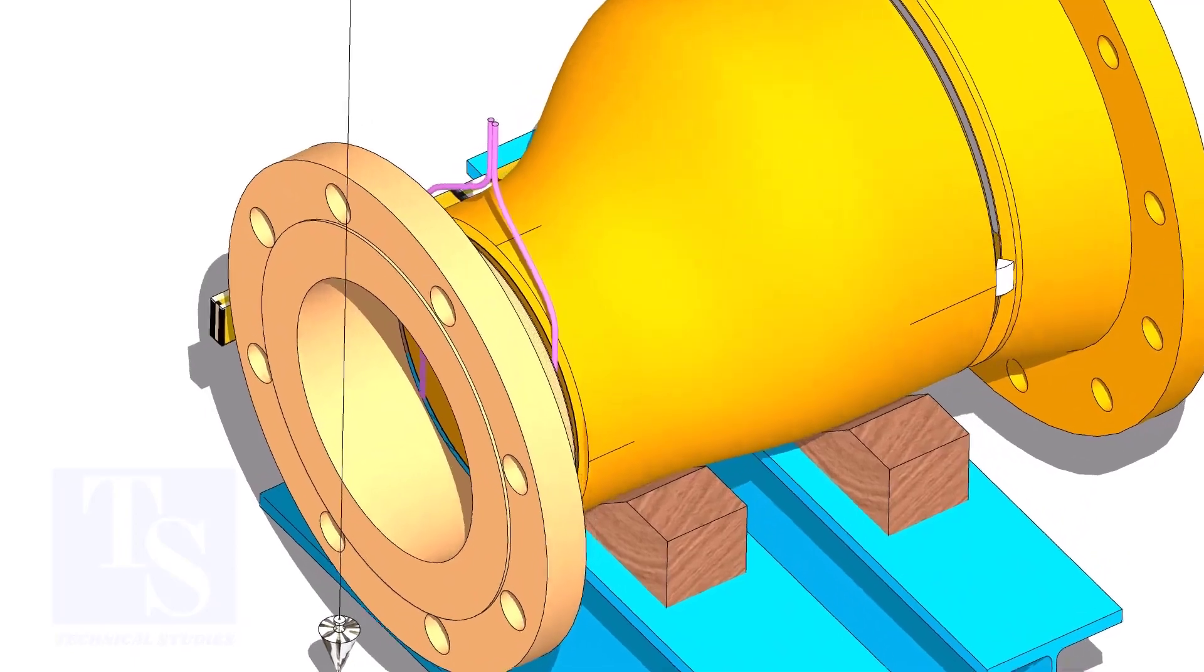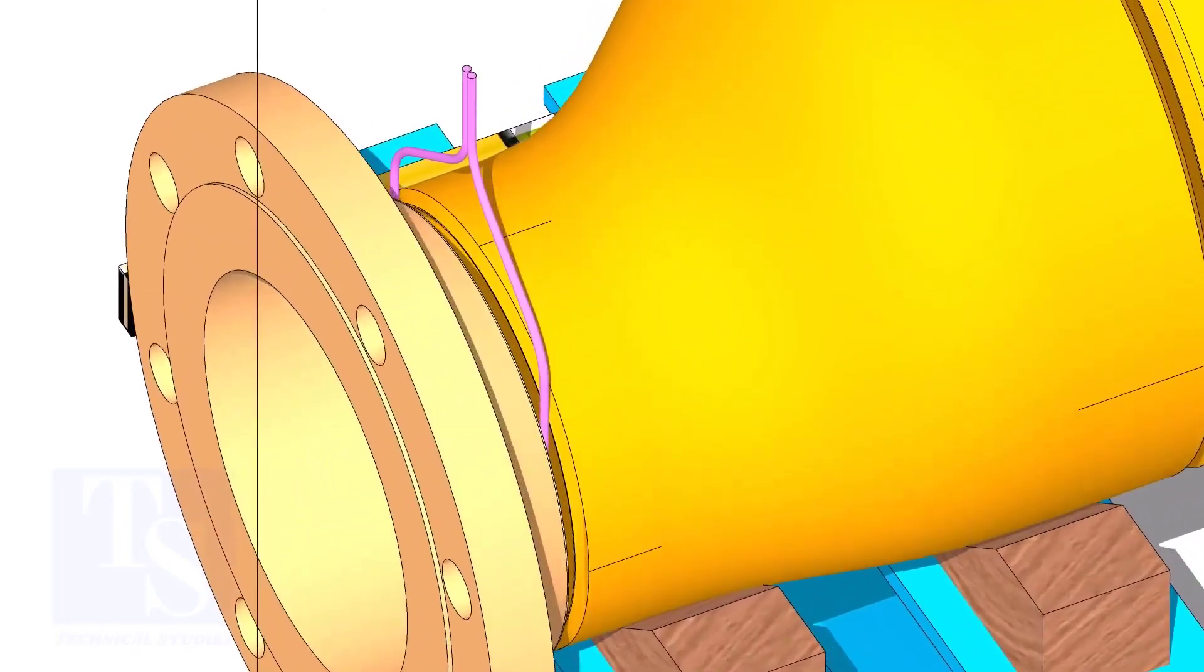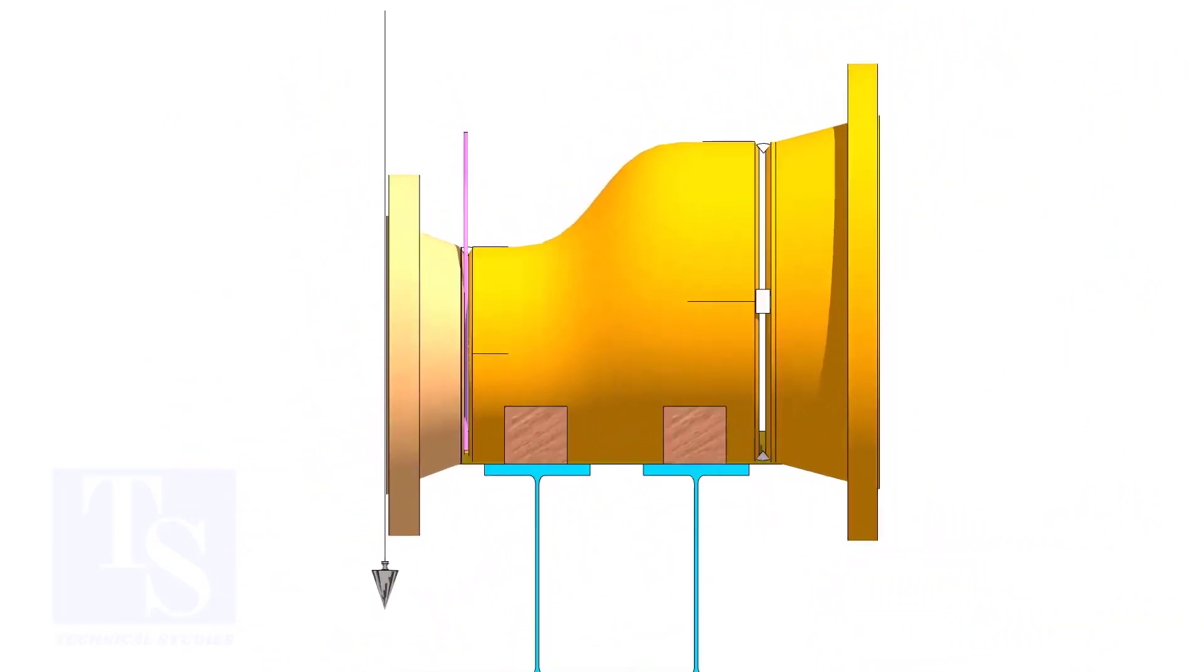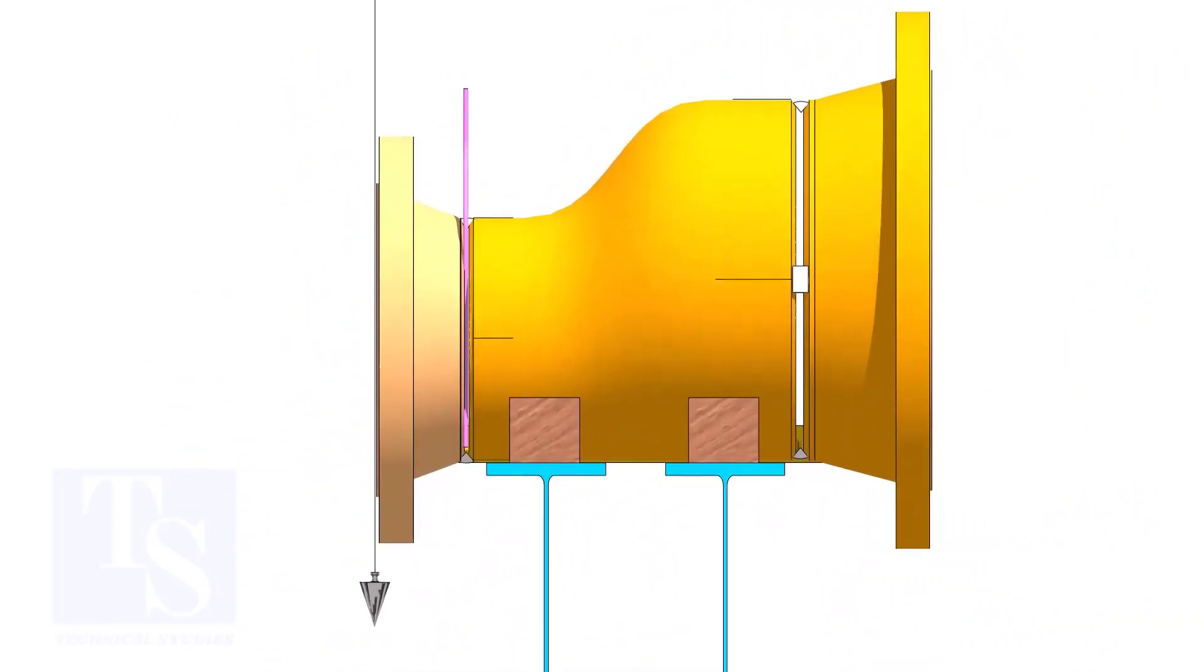And tack weld below. Tack weld on the top side. Correct the vertical plumbness and tack weld below.